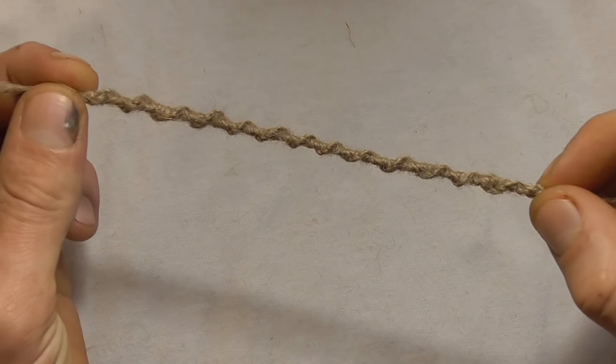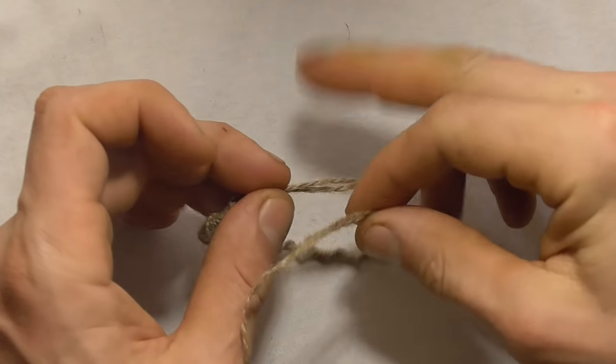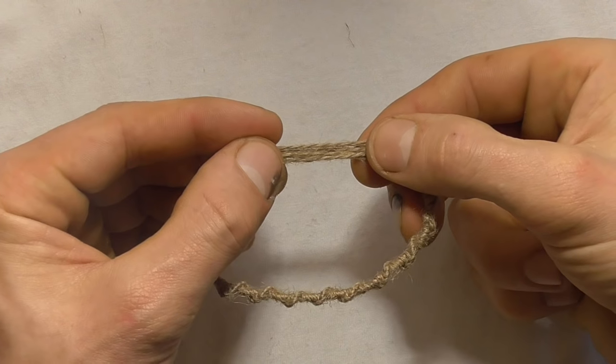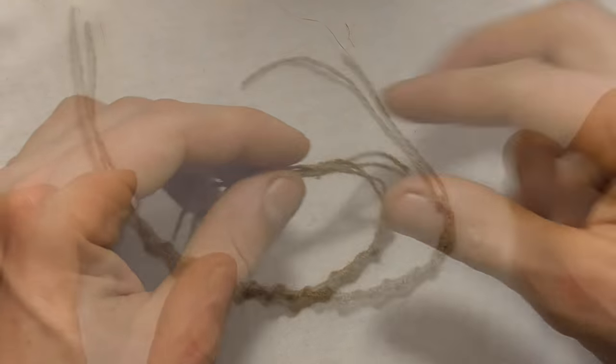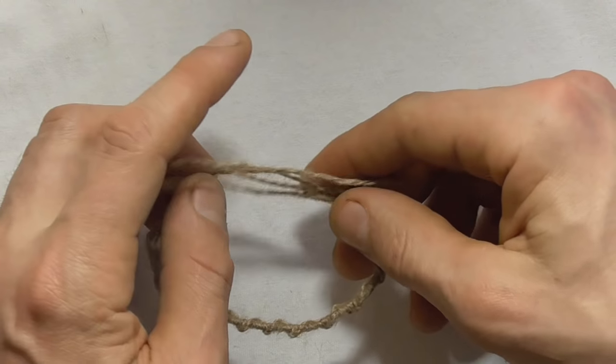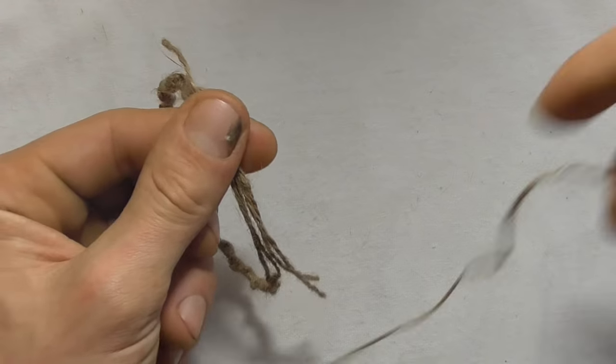Okay, once we've made this spiral long enough to go most of the way around our wrist, we want to make an adjustable closure here so we can tie it tight around our wrist. To make the closure, we just want to overlap the free ends that are on either side of that spiral, just like that.